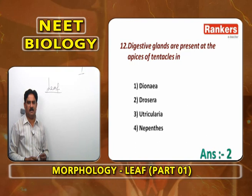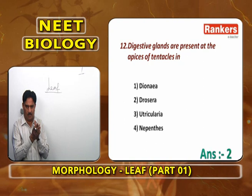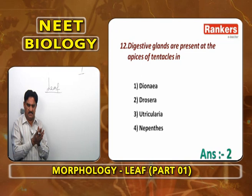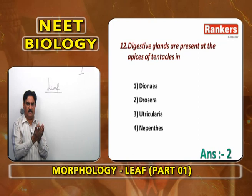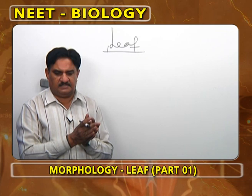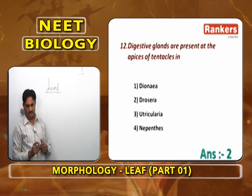Dionaea (Venus flytrap) has a leaf that functions like a book — when an insect lands, the leaf closes and kills it. Utricularia (bladderwort) traps insects in bladder-like structures. Nepenthes (pitcher plant) — the pitcher is a leaf lamina modification; the lid attracts insects, which fall into acidic fluid and are digested. So digestive glands at tentacle apices is Drosera.